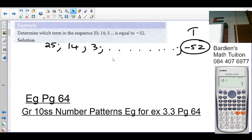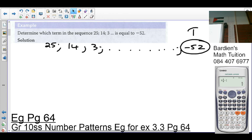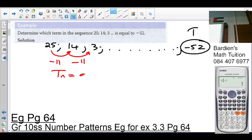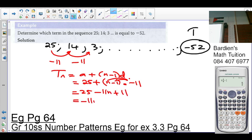Let's go again from the beginning. We are asked to determine which term of the sequence 25, 14, 3, and so on is equal to negative 52. So we're calculating n. Where do we start? We always start with a formula. The general formula first. How do we move from term 1 to term 2? Minus 11. So this is an arithmetic progression. What's the formula? Tn equals a plus (n minus 1)d. What's my a value? 25 plus (n minus 1) times negative 11.